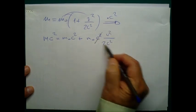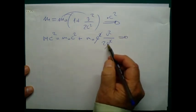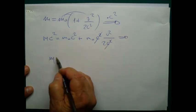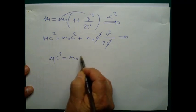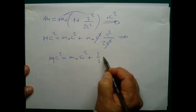We can simplify C squared here. And what we have finally is M C squared equals M₀ C squared plus 1 over 2 M₀ times V squared.